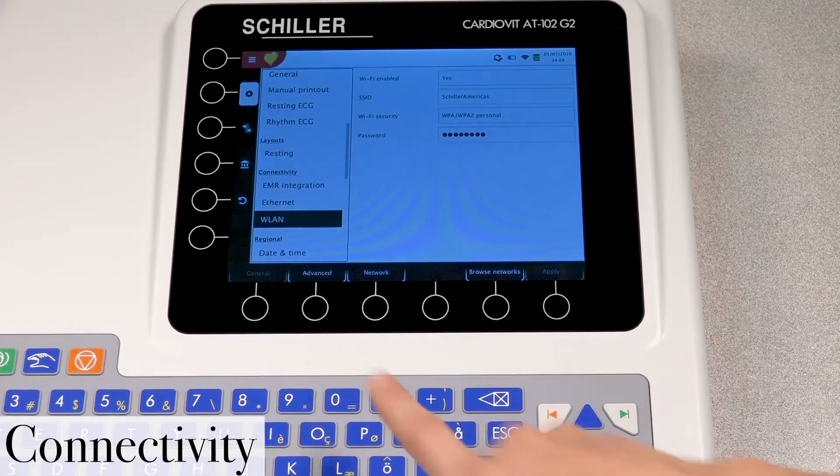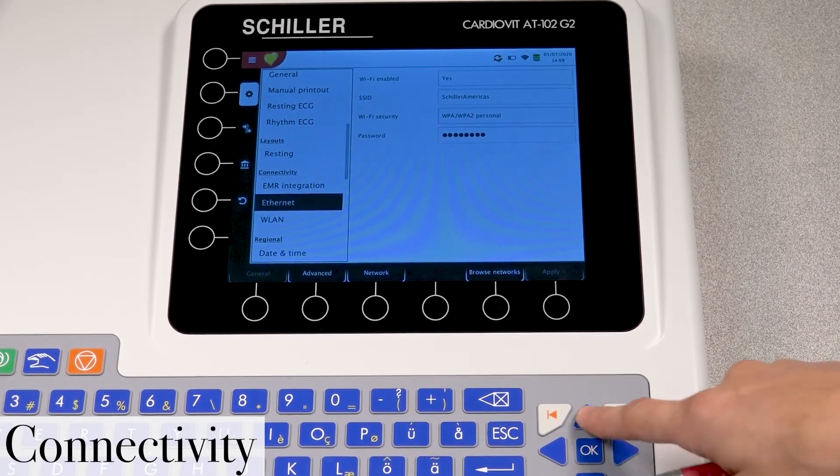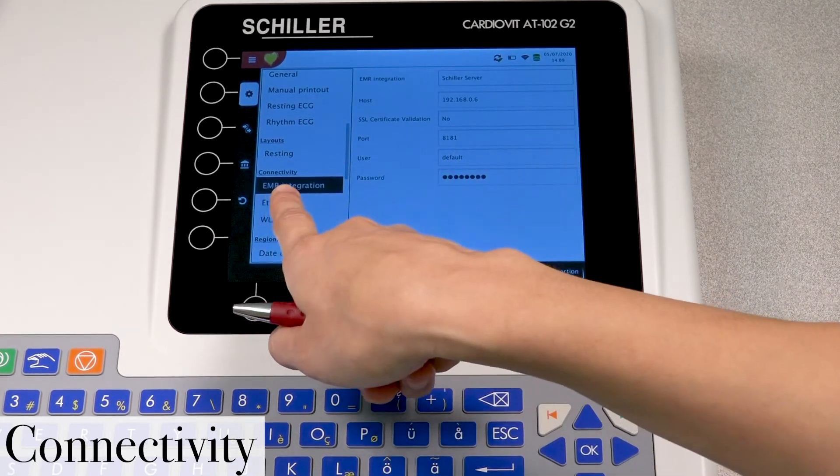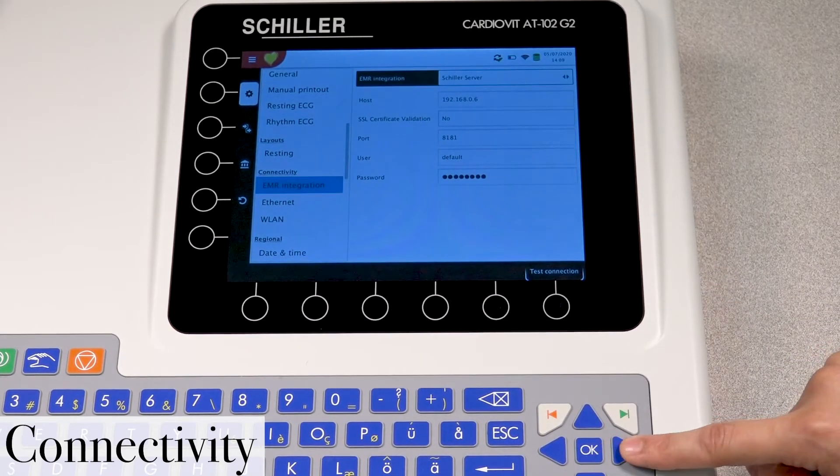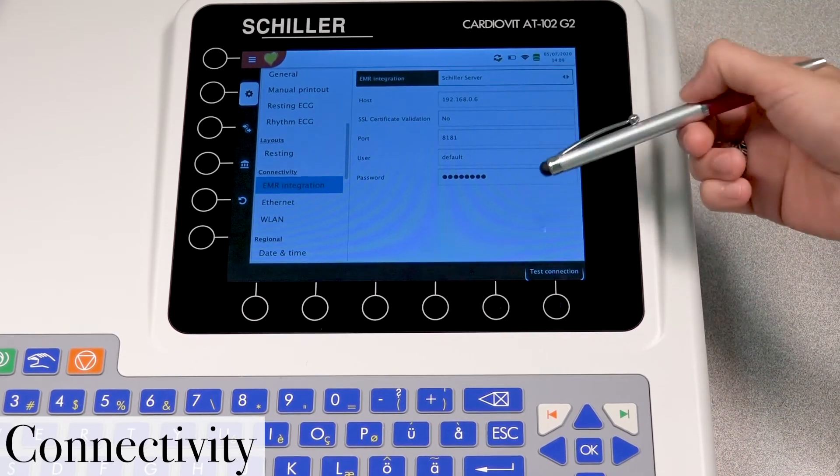Let's move back to the left side here. And with your up arrow key, go up to EMR integration. So we're going to go ahead and press OK. And now we're able to select the different fields here.